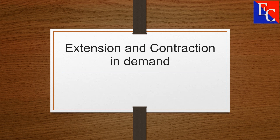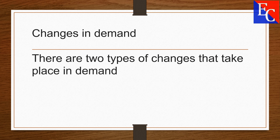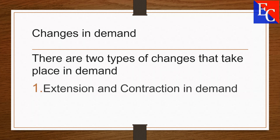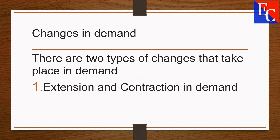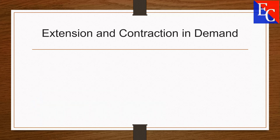There are two types of changes that take place in demand: first, Extension and Contraction in Demand, and second, Rise and Fall in Demand. Today we will discuss the Extension and Contraction in Demand.